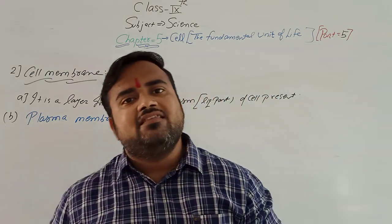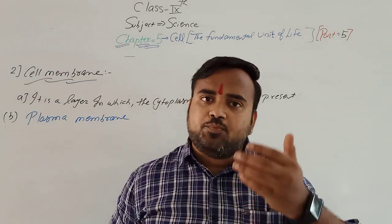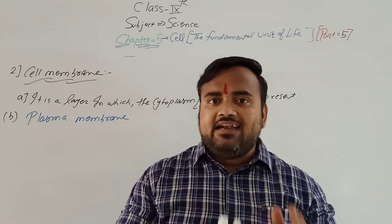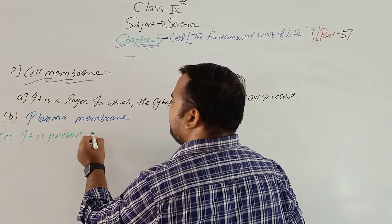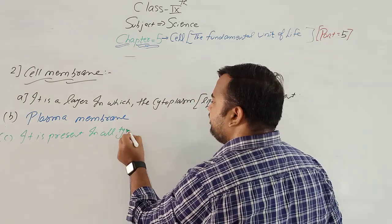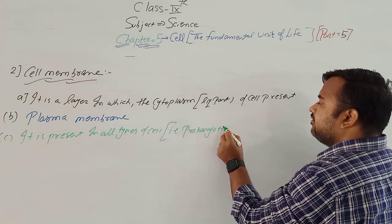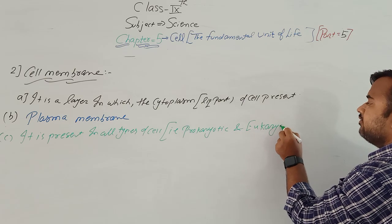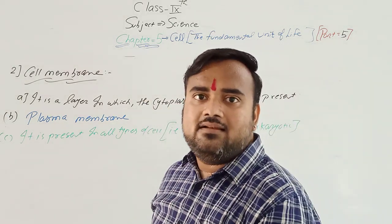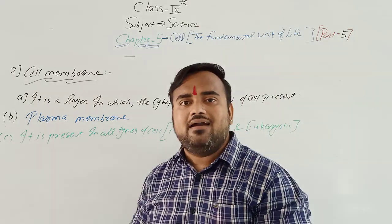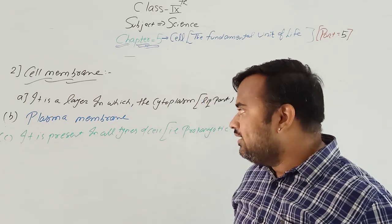Cell membrane is present in all types of cells — whether it is a prokaryotic cell or a eukaryotic cell. Cell wall is present only in the plant cell, but cell membrane is present in both animal cell and plant cell.